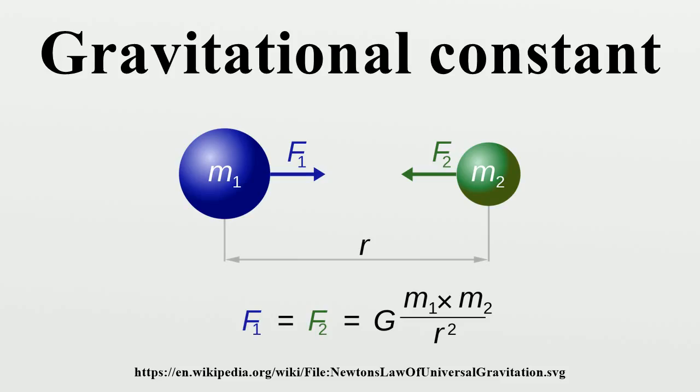Under the assumption that the physics of type Ia supernovae are universal, analysis of observations of 580 type Ia supernovae has shown that the gravitational constant has varied by less than one part in 10 billion per year over the last 9 billion years.